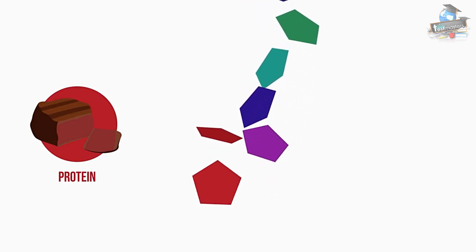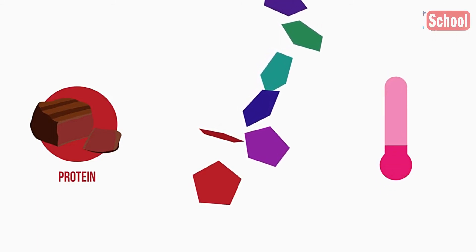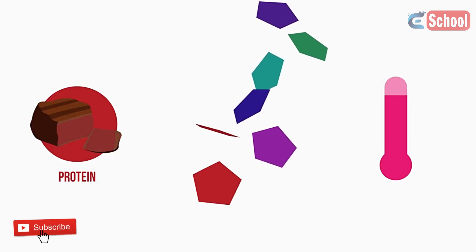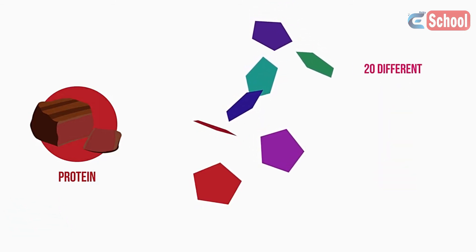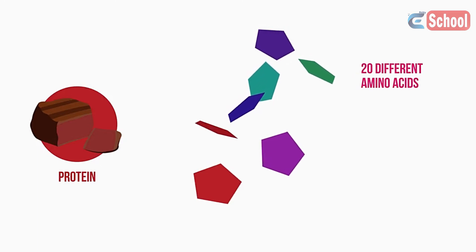Because enzymes are proteins and the bonds holding proteins together are weak, this is why enzymes denature above certain temperatures. The bonds are broken, and the structure of the protein is changed.